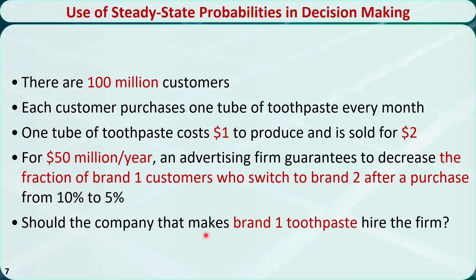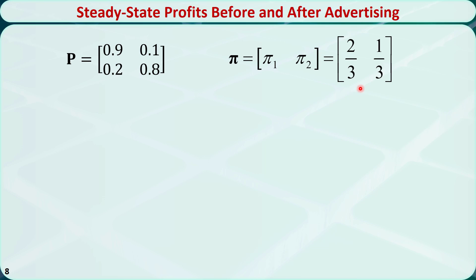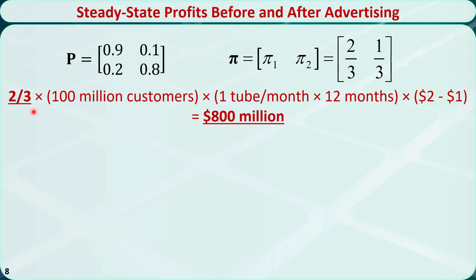Let's calculate the steady state profits before and after advertising. Before advertising, using the original transition matrix and the original steady state distribution, brand 1 will have a market share of 2/3. The profit for the brand 1 toothpaste company equals 2/3 times 100 million customers times 1 tube per month times 12 months times ($2 − $1 profit per tube), which equals $800 million per year.